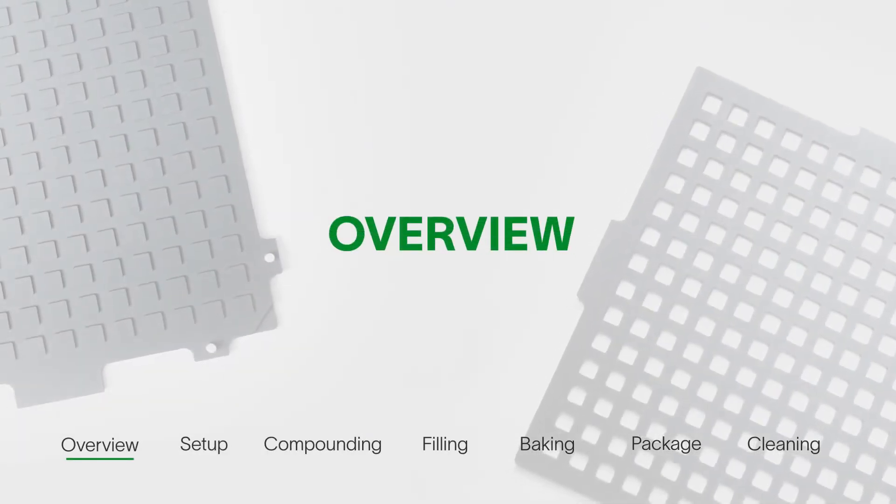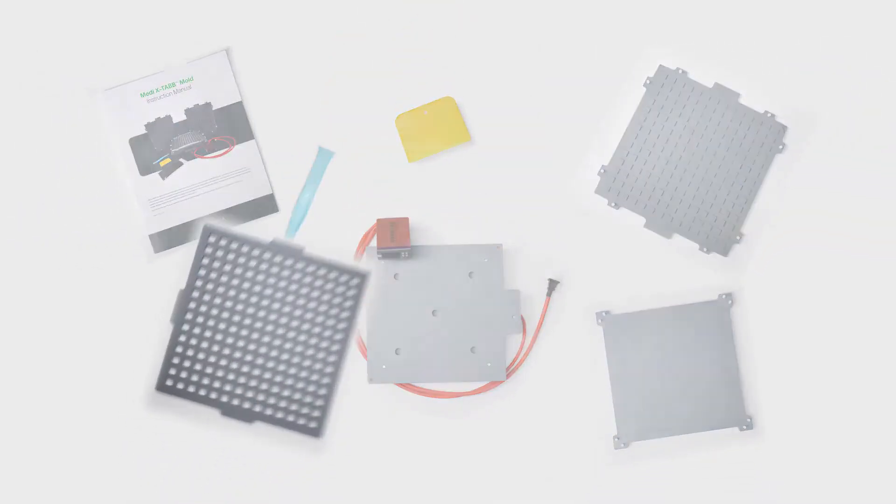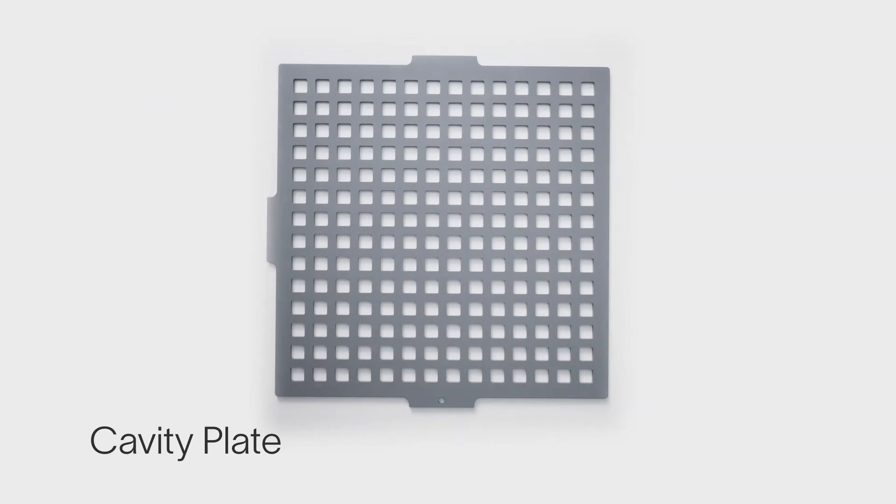First, a brief overview of the essential parts included in the system. Here we have the cavity plate. It consists of 196 cavities,